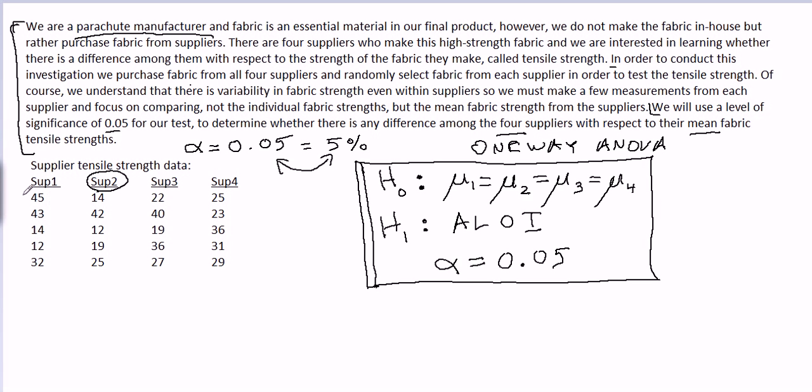We have a null hypothesis and an alternative hypothesis. This would be the hypothesis statement appropriate to resolve this issue that this parachute manufacturer is having. So this is a one-way ANOVA.